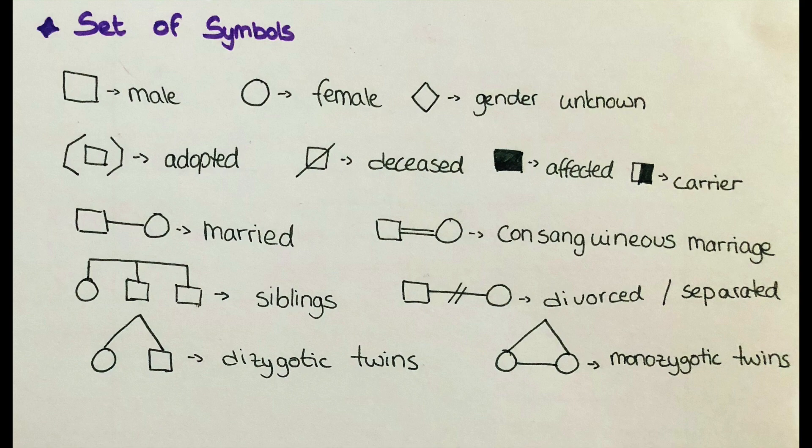For the pedigree chart we use a specific set of symbols which is internationally recognized. Males are indicated with a rectangular shape and females with a round shape. If the gender is unknown but a sibling or other relative was known to exist, it is represented like the male symbol but rotated 90 degrees.